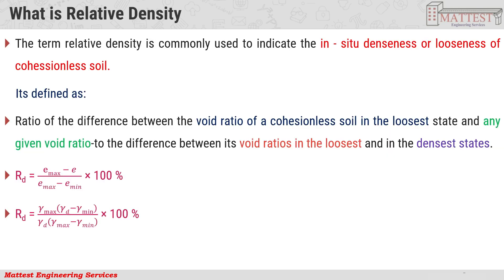What is Relative Density? The term Relative Density is commonly used to indicate the in-situ denseness or looseness of cohesionless soil. It is defined as the ratio of the difference between the void ratio of a cohesionless soil in the loosest state and any given void ratio, to the difference between its void ratio in the loosest state and in the densest state. Mathematically, Relative Density is expressed in terms of void ratio as well as in density.